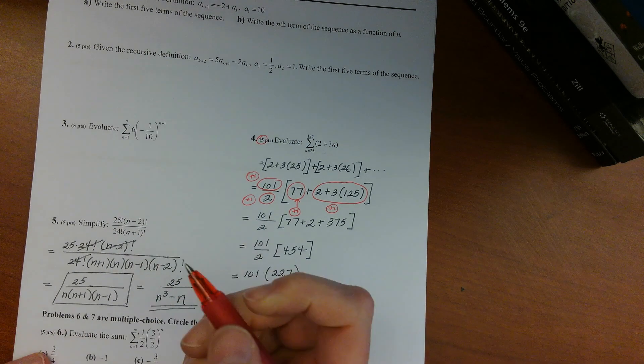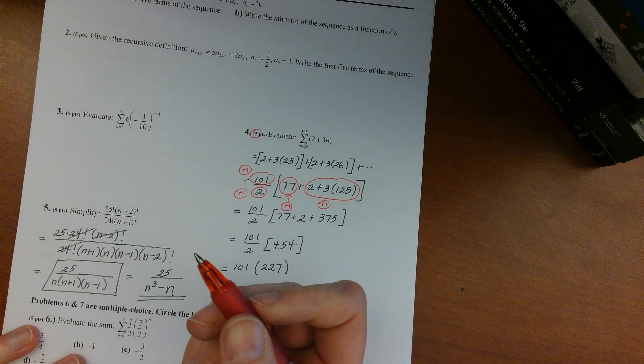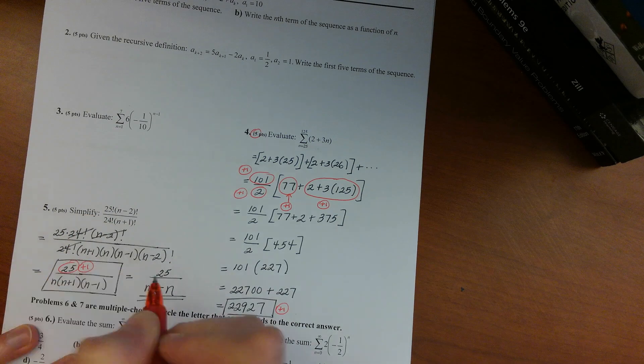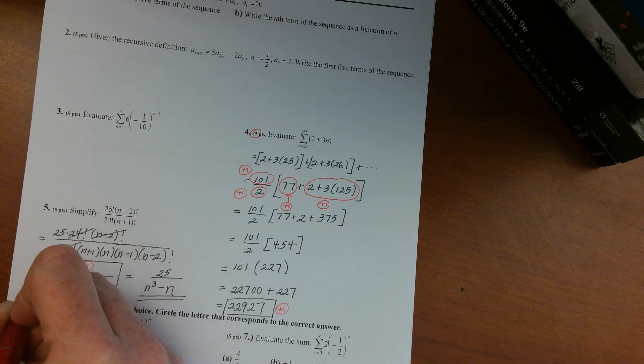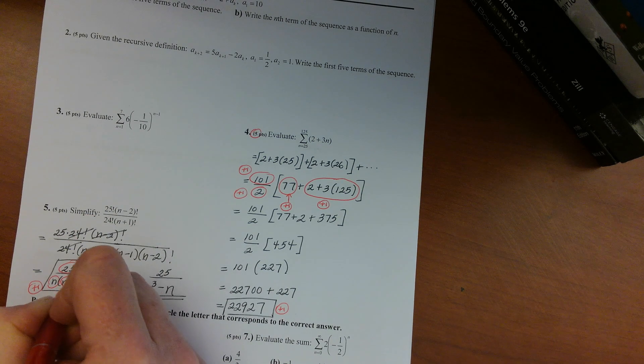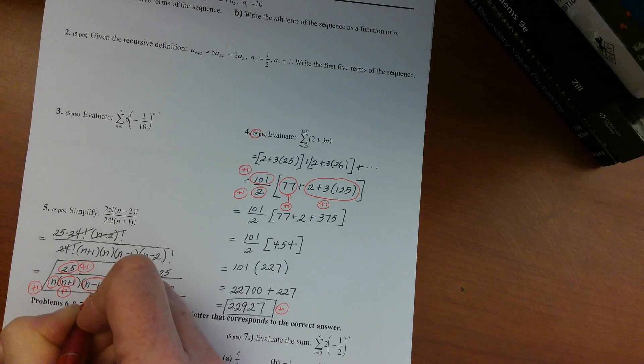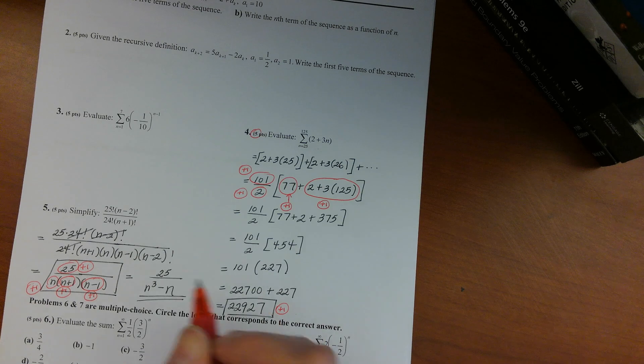Okay, so scoring for this one: one point for getting 25 on the top, and then one point in somewhere in your work showing that you'd have n in the bottom, a point for having n plus 1 as a factor of the bottom, and a point for having n minus 1 as a point in the bottom.